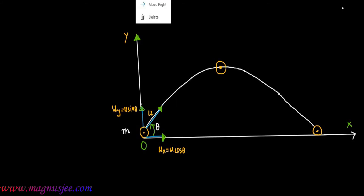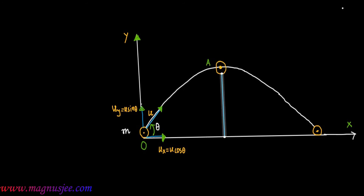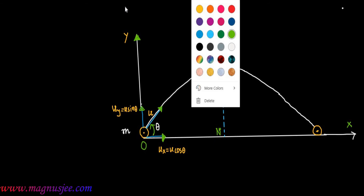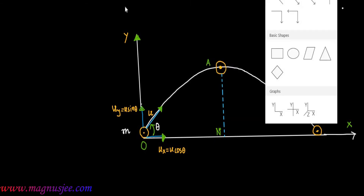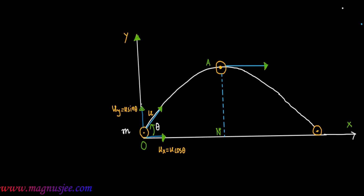When the projectile reaches point A, that is the highest point, the maximum height attained by the projectile is H max. This vertical line represents the maximum height. Point A is where the normal is drawn from the maximum height point down to the ground, and we denote the maximum height attained by the projectile as H max.